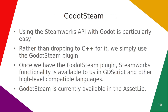However, there's a bridge thankfully. GodotSteam, managed by GP Garcia, uses the Steamworks API with Godot, and you can get it right off of the asset library. It's particularly easy to use. Rather than dropping to C++ — which you can of course do if you want to with Godot — we just use that plugin. Once we have the GodotSteam plugin, Steamworks functionality is available to us in GDScript and really any other high-level compatible language. GodotSteam is currently available in the asset library, which is just a tab in the editor.